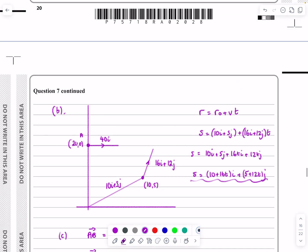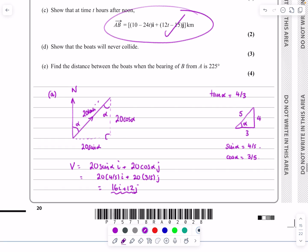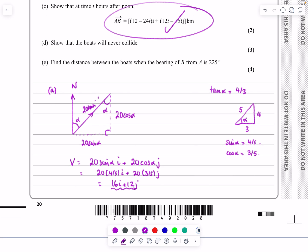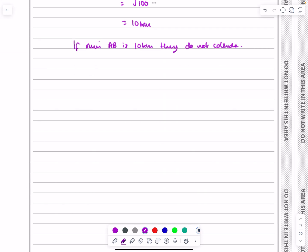Let's do part E. Part E is saying, find the distance between the boats when the bearing of B from A is 225 degrees. Let's put a quick diagram out for that. This is relatively standard - they use this idea quite a bit. If the bearing is 225, that's going to be like that. If that's 225 here, then that angle there is 45 degrees. AB was (10 minus 24T)I and (12T minus 15)J.